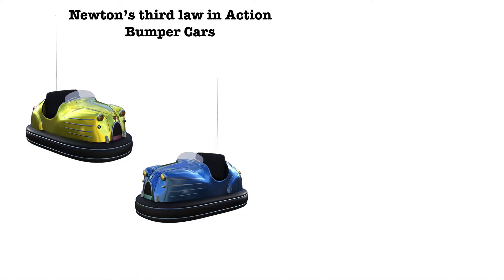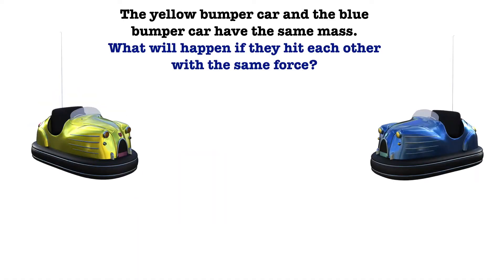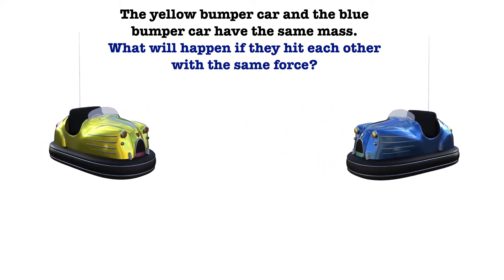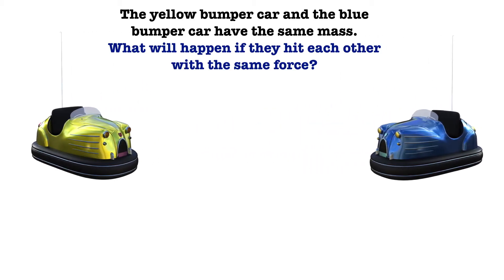Let's see what happens with bumper cars. The yellow bumper car and the blue bumper car have the same mass. So what will happen if they hit each other with the same force? Since they have the same mass and force, they will move backwards with the same speed.